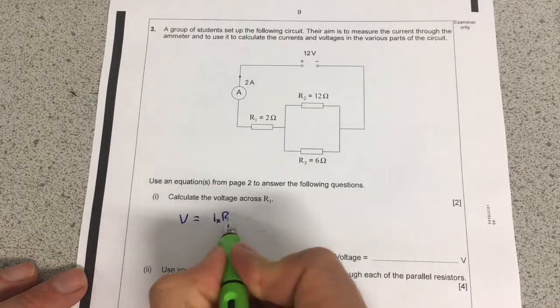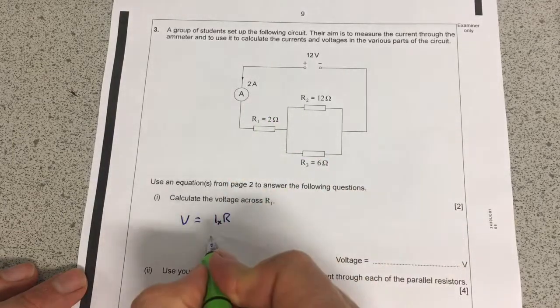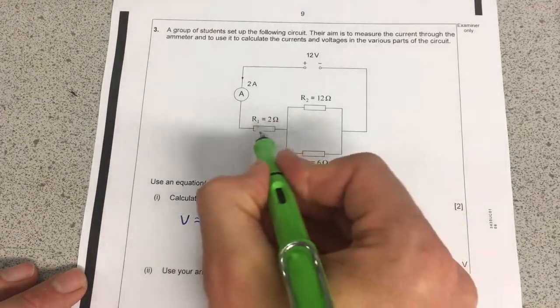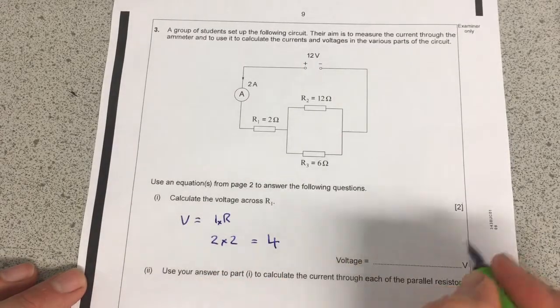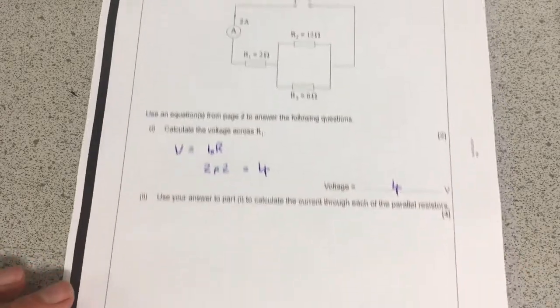And that's current times resistance, so I grab the current from up here, which is 2, and I times that by the resistance, which is 2, and that will give me a voltage of 4 volts. Okay, this one should be nice and quick.